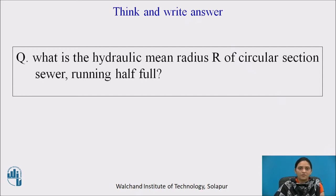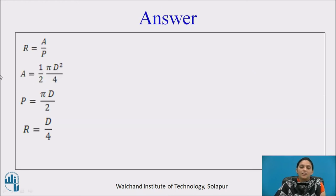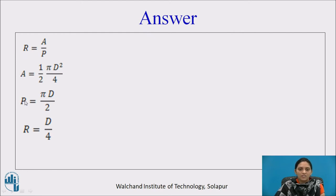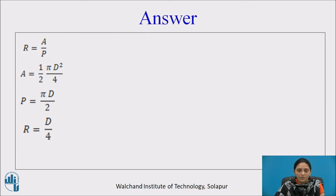Pause the video and answer: What is the hydraulic mean radius of a circular section sewer running half full? Answer: The hydraulic mean radius is area divided by perimeter. Running half full, the area is half of πd²/4 and the perimeter is πd/2. Substituting gives R = d/4. So whether the sewer runs full or half full, the hydraulic mean radius is the same: d/4.